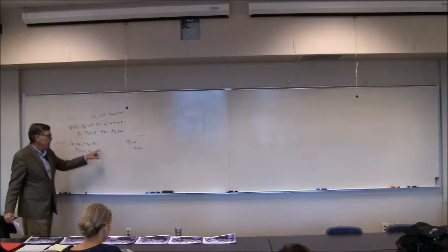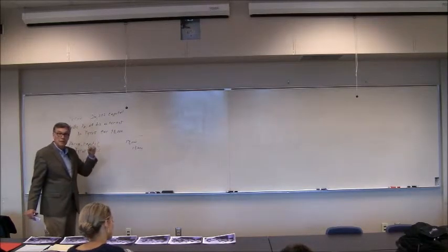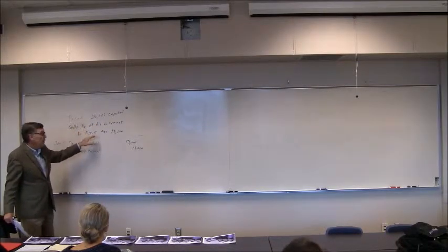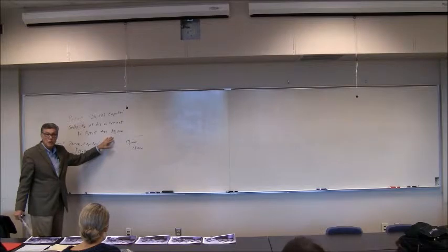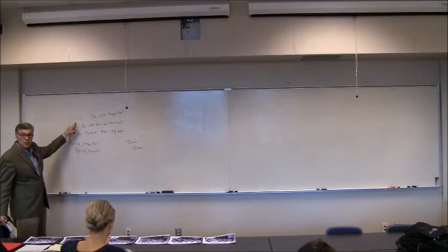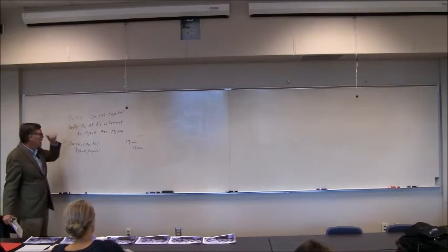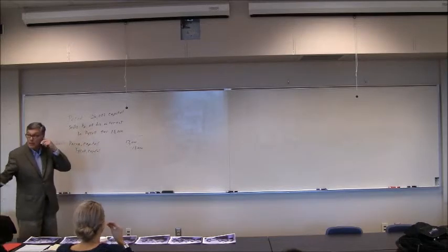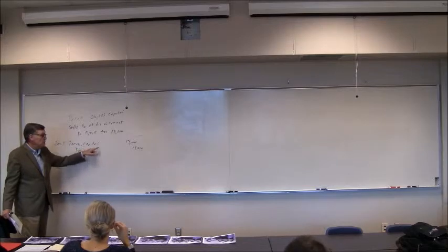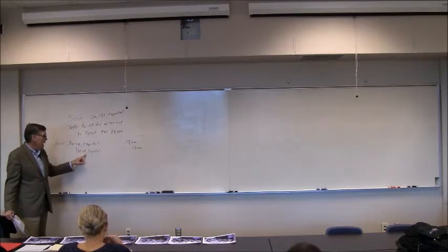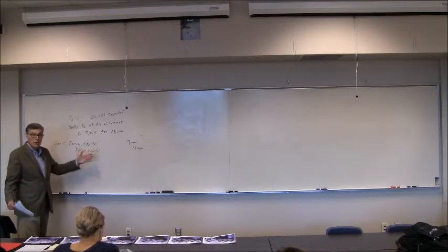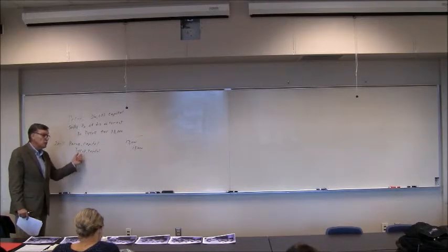Perez's capital account will drop down to $13,000. Student: Why $13,000? It's half of $26,000, because he sold half of it. Now, the $18,000 is not a partnership concern — that $18,000 is between Terrell and Perez. The only thing that is a concern is Perez's capital goes down by $13,000 because half was sold, and Terrell's new capital account is $13,000. The $18,000 is between two private parties.